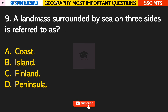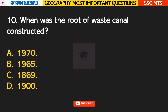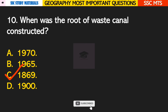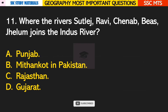Question number 9: a landmass surrounded by sea on three sides is referred to as? Answer D — it is referred to as a peninsula. Question number 10: when was the route of the Suez Canal constructed? Answer C — it was constructed in the year 1869.